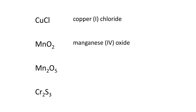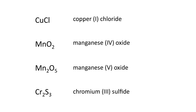For Mn₂O₅, oxygen forms ions with a charge of negative two, and there are five oxygen ions, giving a total negative charge of negative ten. There are two manganese ions, so each must have a positive charge of plus five — the name is manganese(V) oxide. For the last example, Cr₂S₃, sulfur forms ions with a charge of negative two. There are three sulfur ions, giving a total negative charge of negative six. Each chromium ion has a charge of plus three, so the name is chromium(III) sulfide. Thanks for watching The Chemistry Solution! Look for part two of naming ionic compounds, which covers polyatomic ions, coming soon.